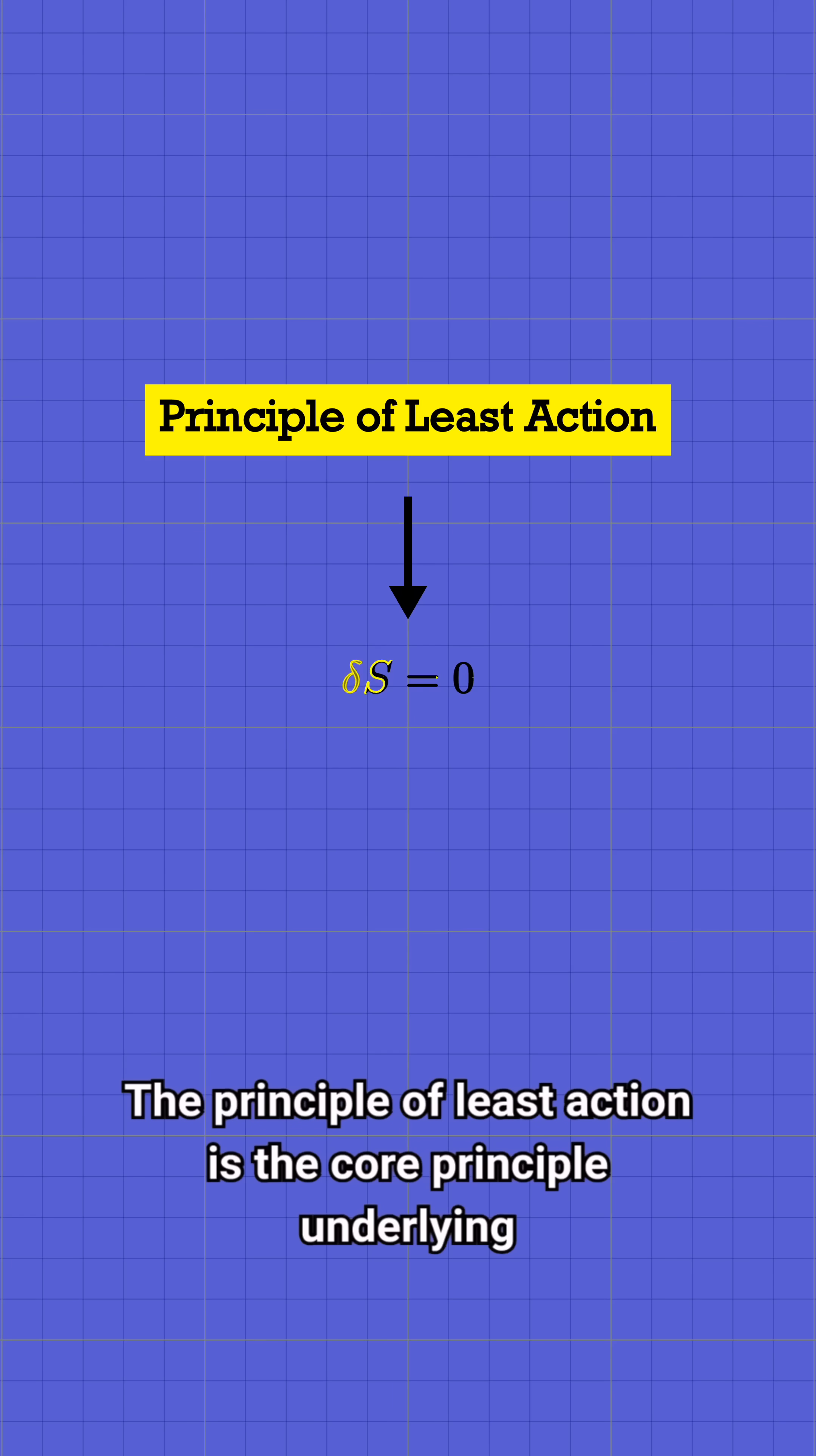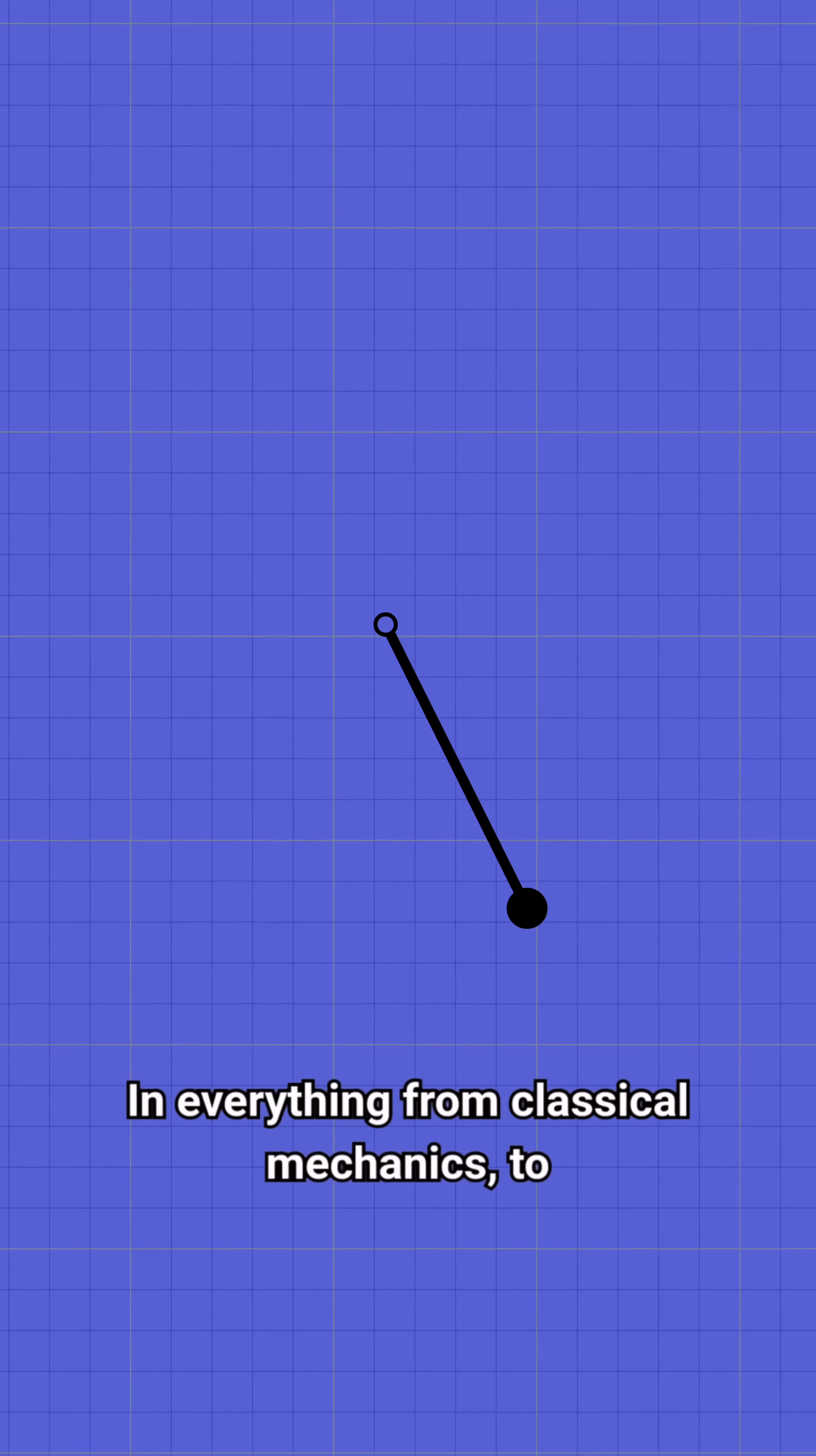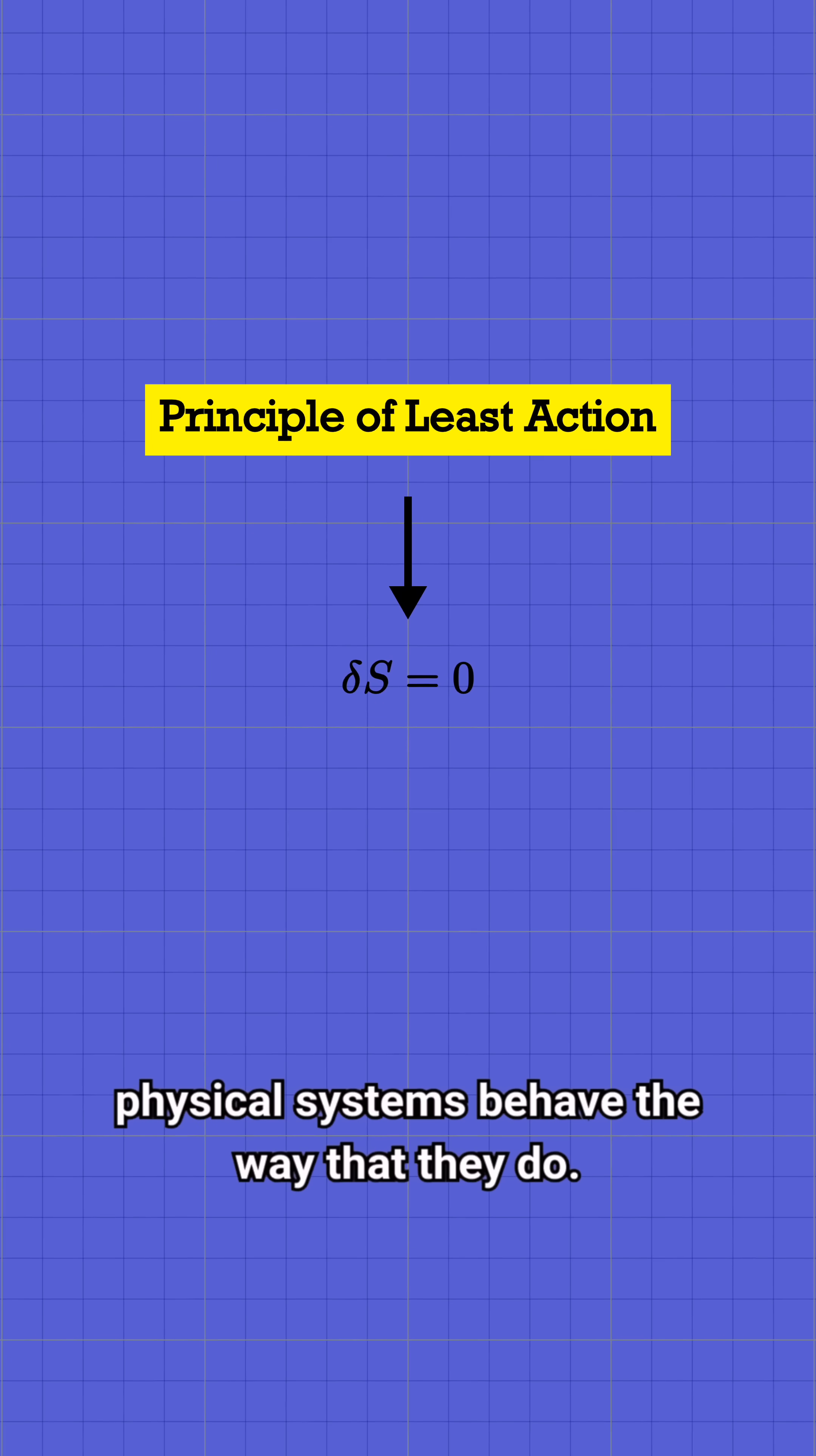The principle of least action is the core principle underlying modern physics. In everything from classical mechanics, to electromagnetism, to general relativity, the principle of least action explains why physical systems behave the way that they do.